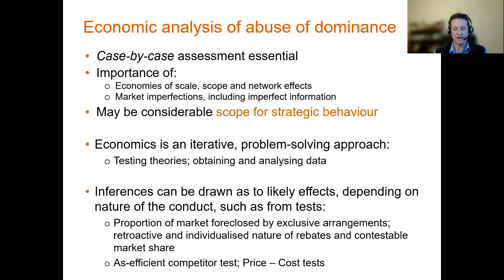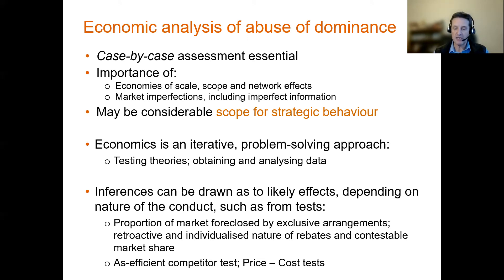Similarly, if there are network effects that provide an incumbent with first-mover advantages, the rival may struggle to build up those network effects and be competitive, even if it has a great product and great offering. We also need to consider market imperfections: information asymmetries, which allow the incumbent to invest and build up a reputation; and financial market imperfections, which mean rivals or entrants may not have the deep pockets of the incumbent and may not be able to finance themselves through an initial period of exclusionary conduct. There is essentially scope for strategic behaviour on the part of the incumbent.